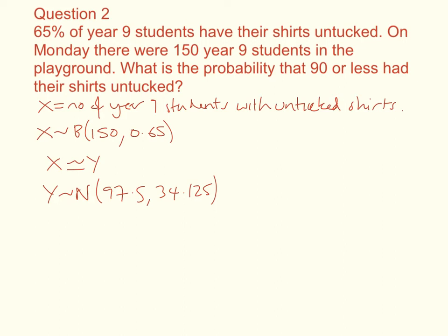Now, again, we need to start calculating our probabilities. So we're being asked to find the probability that 90 or less had their shirts untucked. So the probability that x is less than or equal to 90. We need to do our continuity correction here. So we're going to work out what number we need. 90 is included. So that's where the line's going to go. So we're finding that's the same as the probability that y is less than or equal to 90.5.